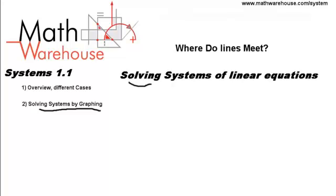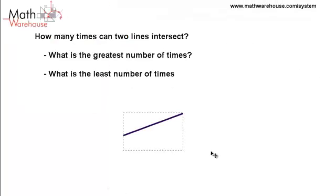Okay, so the first thing we want to understand before we try anything else, before we actually try to find where lines meet, let's make sure we understand what we're trying to do and what all these words mean. So first off, a system of linear equations simply means more than one linear equation, more than one line.